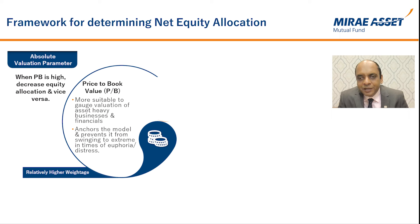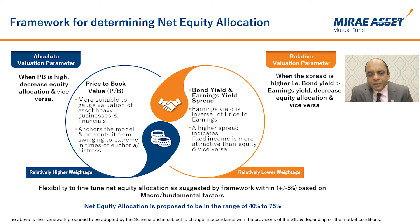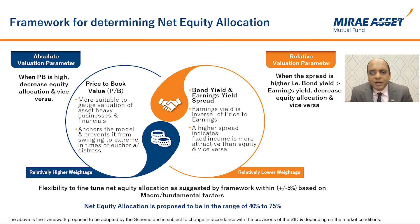When the price-to-book is higher, the net equity allocation should be decreased and vice versa. This parameter carries a relatively higher weightage in the overall framework. The second parameter is the spread of bond yield over earnings yield — earnings yield being the inverse of price-to-earnings. A higher spread indicates fixed income is more attractive than equities. When bond yield is more than the earnings yield, net equity allocation should be decreased. This parameter carries a relatively lower weightage in the overall framework.